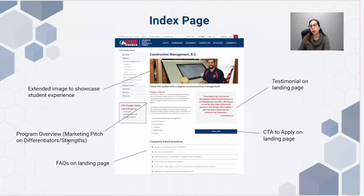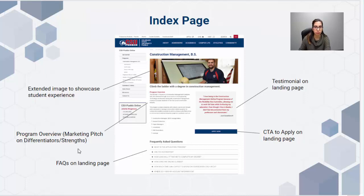You're going to need to write the program overview. This is really the pitch on the differentiators and strengths. The course catalog does have a little overview but it's not written at a second or third grade level, so this is our chance to really say — if you have two programs that are exactly the same — why pick the one at CSU Pueblo.